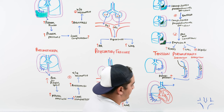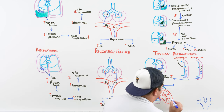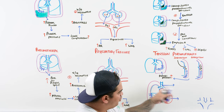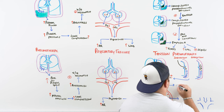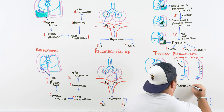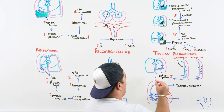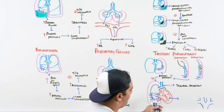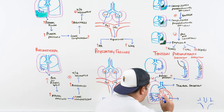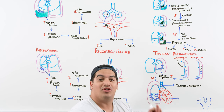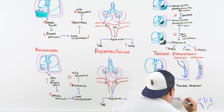Tracheal deviation to the opposite side is a hallmark of tension pneumothorax. The high intrapleural pressure also compresses the right heart, impairing venous return and reducing diastolic filling. Blood backs up from the right atrium to the superior vena cava to the jugular veins, causing jugular venous distension (JVD).